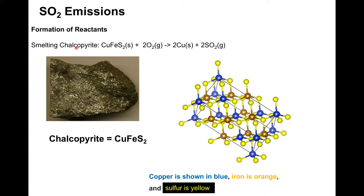Here is a simplified, non-balanced reaction: chalcopyrite—CuFeS₂—reacts at high temperature with oxygen, liberating copper and producing sulfur dioxide. All the sulfur atoms are chemically separated from the copper and iron atoms. The resulting SO₂ is a gas that historically was directly emitted to the atmosphere. So what could the negative environmental implications be?